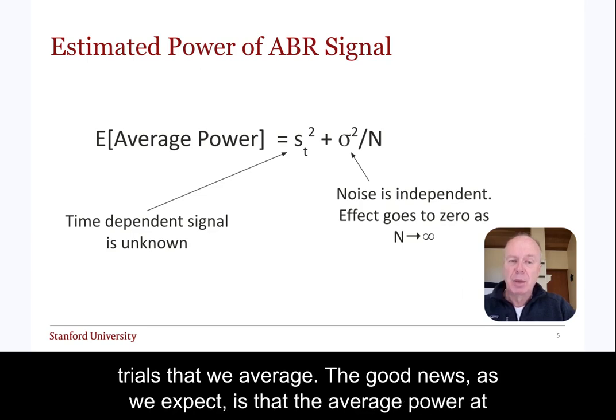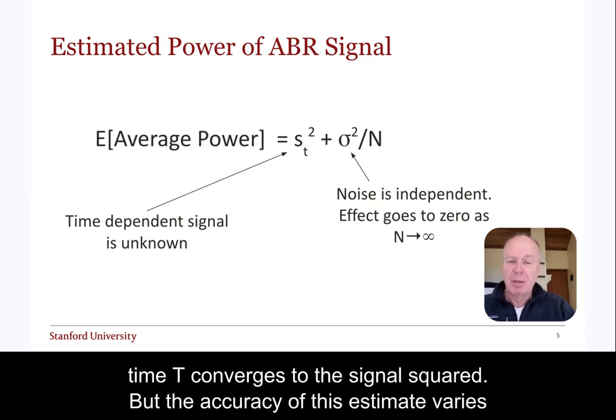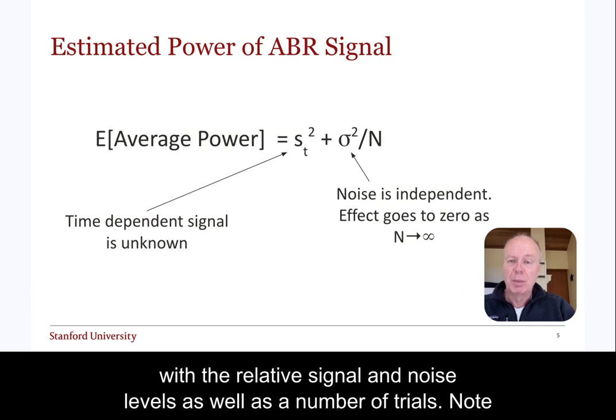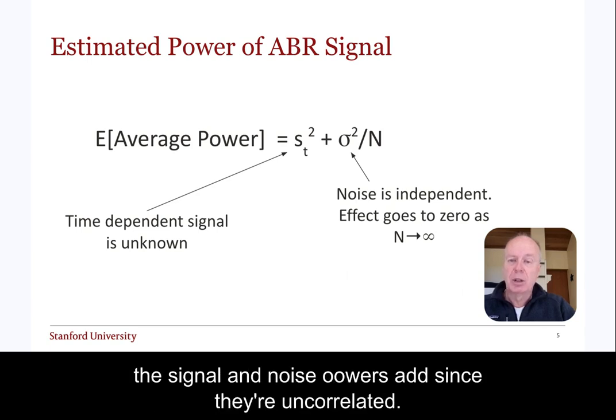The good news, as we expect, is that the average power at time t converges to the signal squared, but the accuracy of this estimate varies with the relative signal and noise levels, as well as the number of trials. Note the signal and noise powers add since they are uncorrelated.